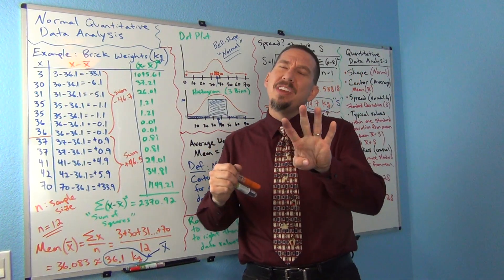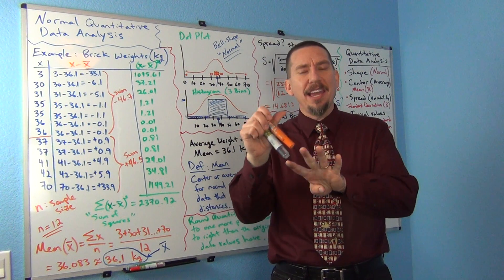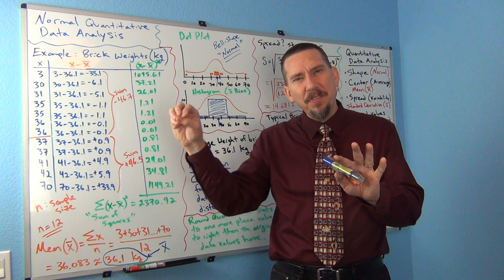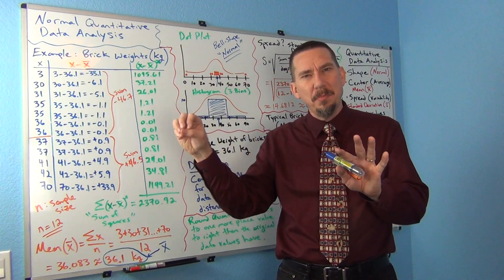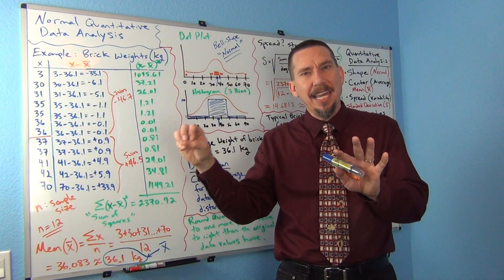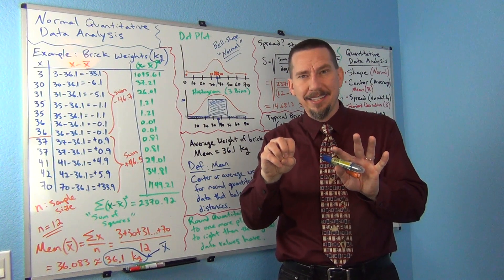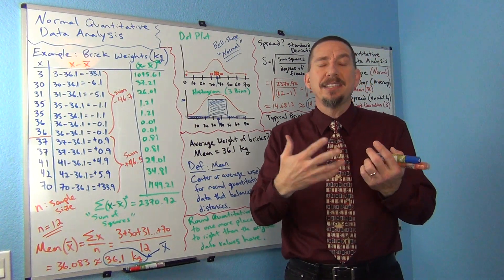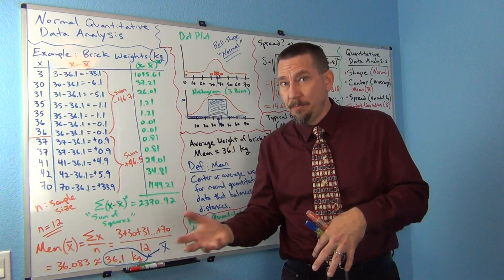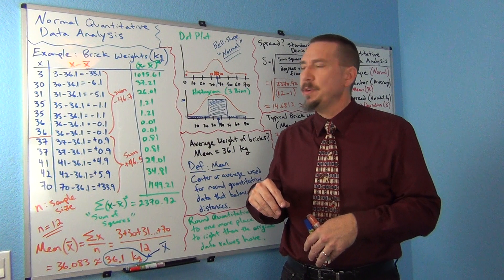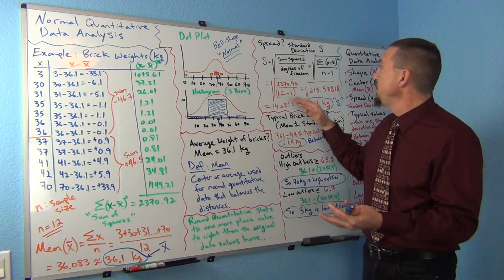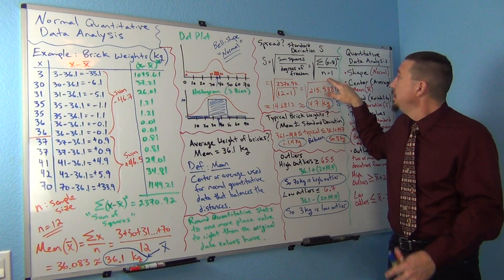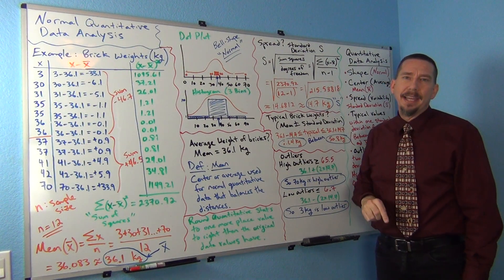In other words, the first four exams have variability. They can be different numbers. But that last exam, in a way, is fixed if you know the mean. If we know the mean average has to be 90, I can calculate what I need to get on the last exam. So, of the five exams, four of them have variability. That's called degrees of freedom. That's why in the variability calculation, the spread calculation, they divide by n minus 1, not n.